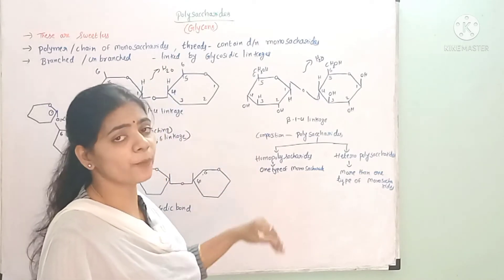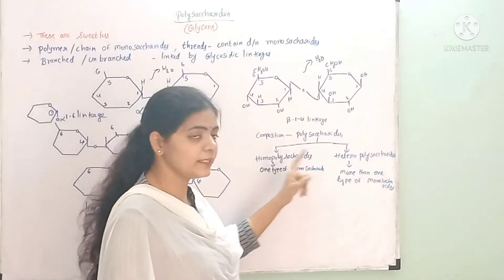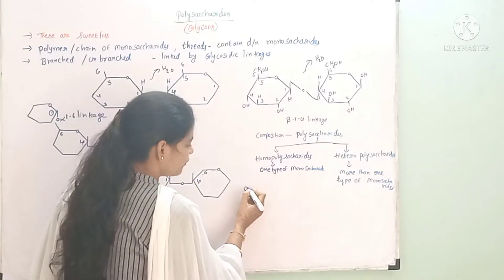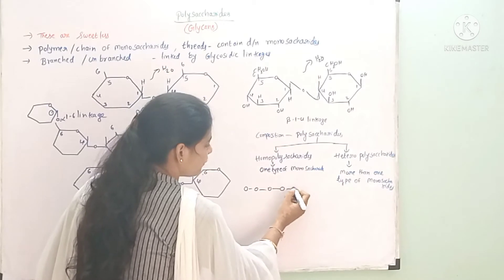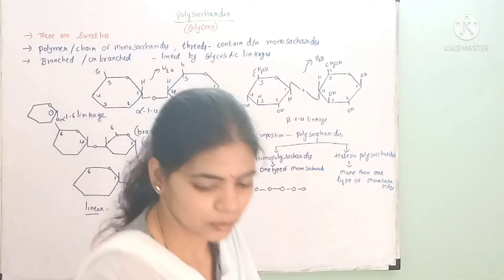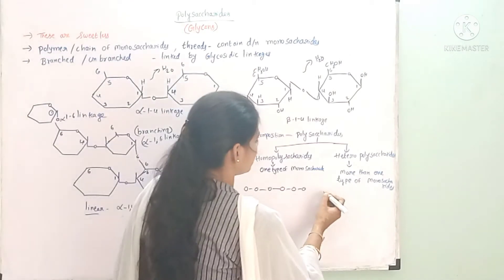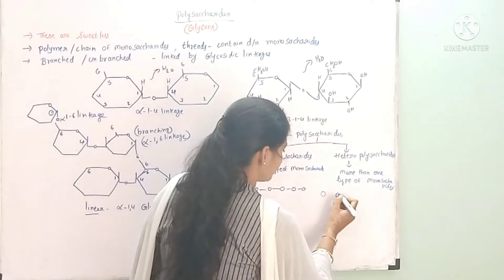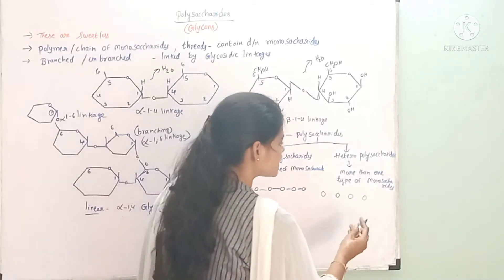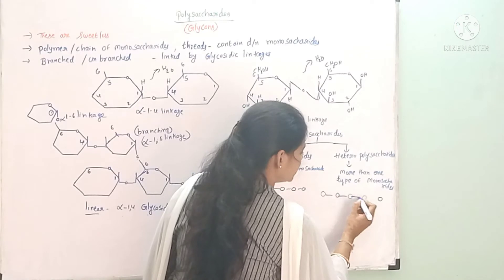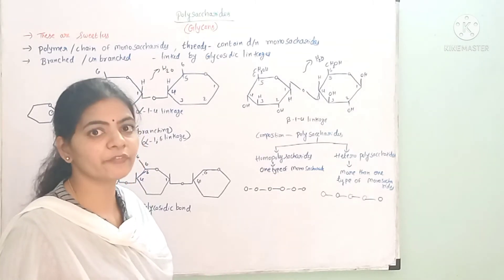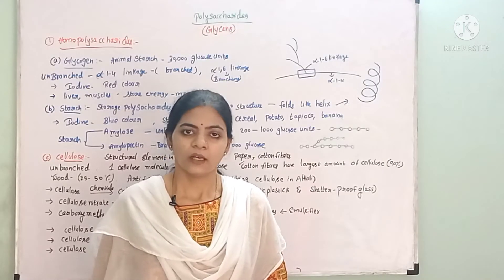Polysaccharides, depending upon their composition, are of two types: homopolysaccharides and heteropolysaccharides. Homopolysaccharides contain only one type of monomer — only one type of monosaccharide. Heteropolysaccharides contain more than one type of monosaccharide and form a chain of polysaccharides.